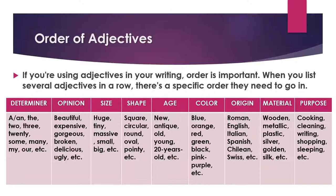Next, size — for example: huge, tiny, massive, small, big. Next, shape — for example: square, circular, round, oval, pointy.